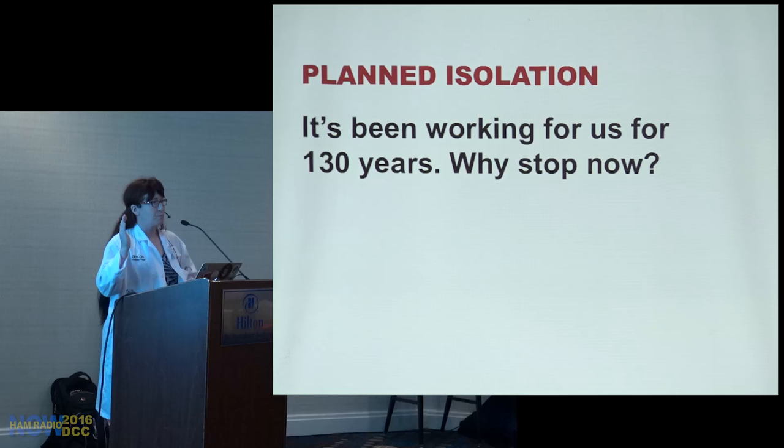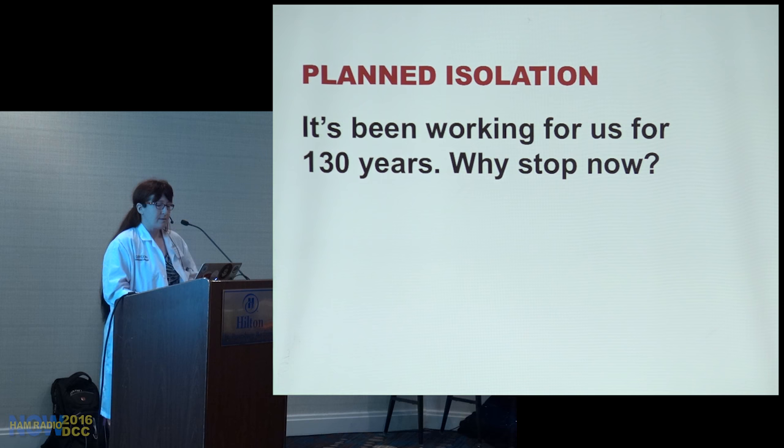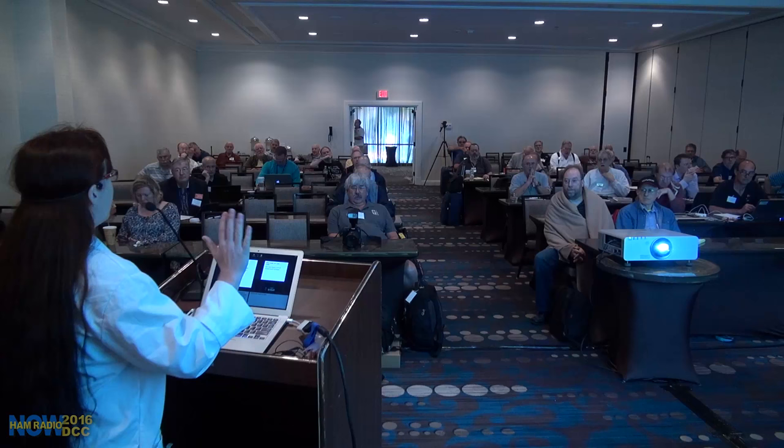Planned isolation has an upper limit when dealing with population density — whether with land or spectrum, it works up to a point. When cities get too crowded, planned isolation breaks down. Examples: the short-term rental controversy in Austin, Texas, where lots of ink is being spilled on how to regulate short-term rentals. Another example is rent control in New York — a long, twisted history with real-world consequences for both landlords and renters. There are similarities here in spectrum management too.